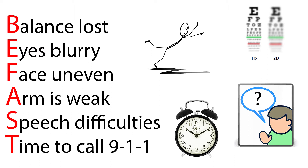F for face — the face is uneven; there is sudden weakness or droopiness of the face. A for arms — sudden weakness or numbness in one or both arms or legs. S for speech — the individual has difficulty speaking, or their speech is slurred or garbled. T for time — it's time to call 911. Time is very important in stroke treatment. The sooner treatment begins, the better the chances are for recovery.